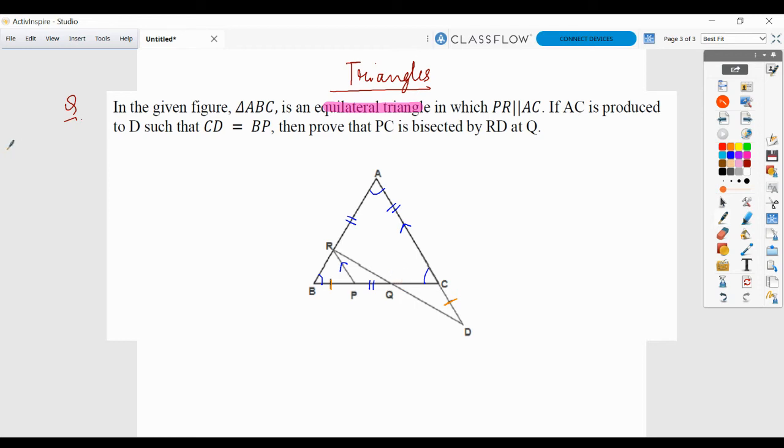So first of all, whatever data was given to me in the question, I have translated it into my figure. And I'll also decode my to-proof statement which says PC is bisected by RD. So if I am able to prove PQ is equals to QC, I'll be able to prove that PC is getting bisected by RD.